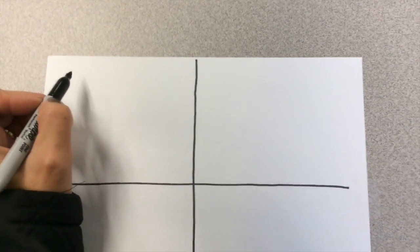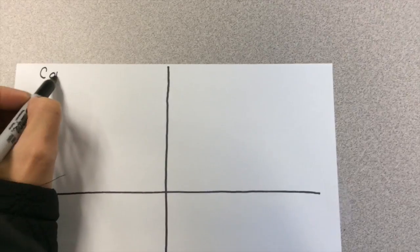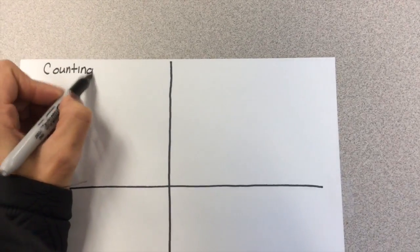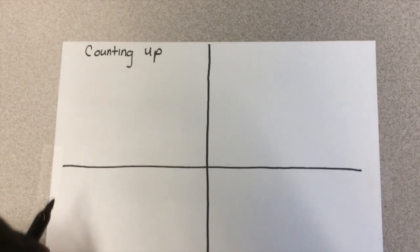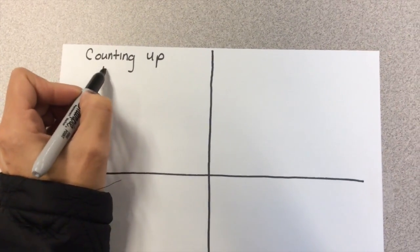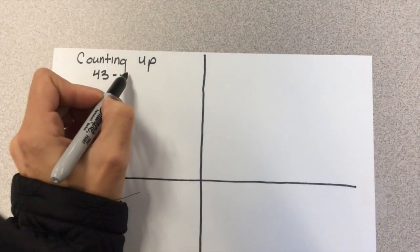The first strategy we're going to start with is called counting up, and we're going to solve the problem 43 minus 19.